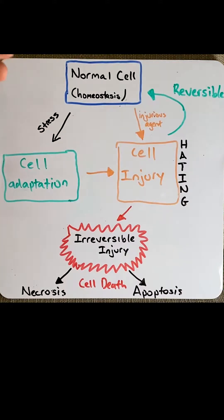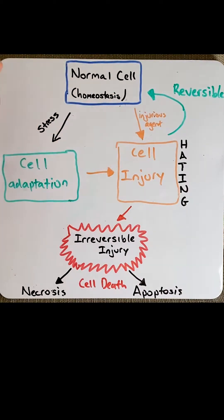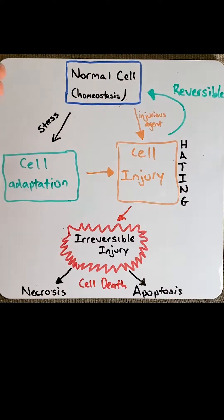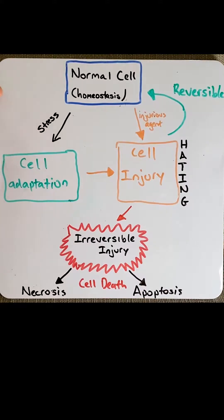Cells are very fragile biological units. For them to stay healthy, their internal environment must be tightly regulated. This is known as homeostasis. Sometimes these cells will encounter physiological or pathophysiological stresses, such as an increased or decreased workload or increased exposure to harmful chemicals, such as smoking. So these cells will need to adapt to these stresses to survive.